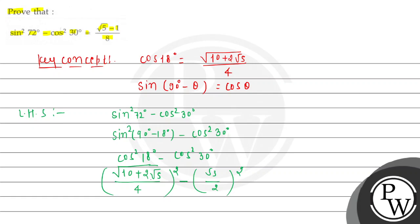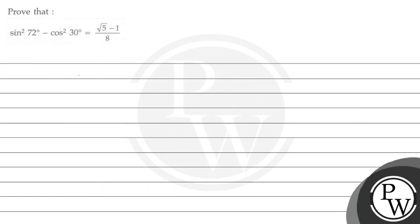Now we'll expand this and get (1/16)(10 + 2√5) - 3/4. After taking LCM, which is 16, it becomes (10 + 2√5 - 12)/16.